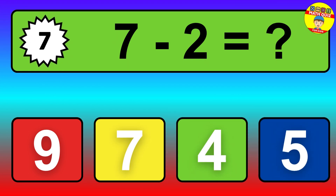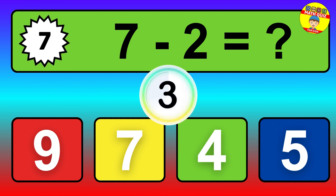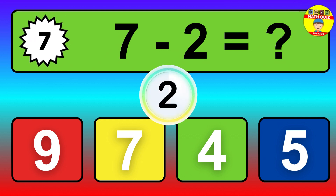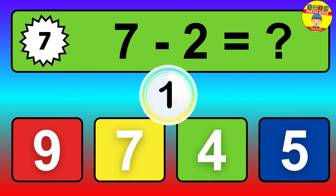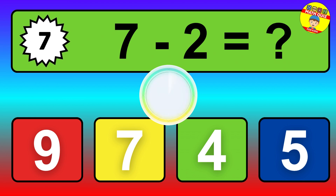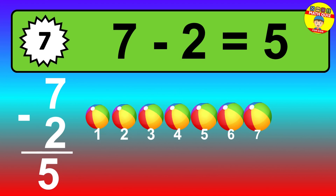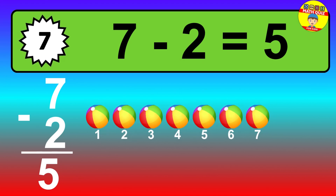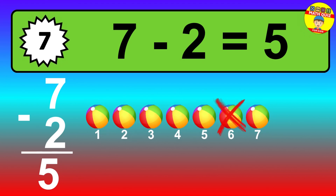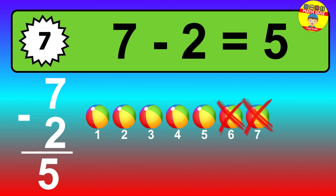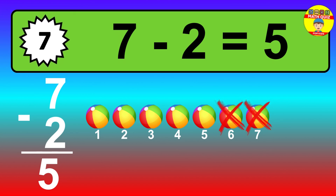Question 7. 7 minus 2 equals what? So the answer is 7 minus 2 is 5. Let's count it. 1, 2, 3, 4, 5.